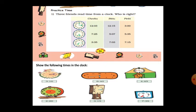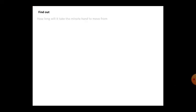For the next clock, Chikku reads 7:25, Bittu reads 5:07, and Pinky reads 5:35. You have to think and answer which one is correct. Then for another clock, the times given are 3:35 and 7:15. Pinky is right for all of them. Now, show the following times in the clock: 3:10, 6:40, 4:45, 2:20, 3:15, and 7:35. Write and solve each time.